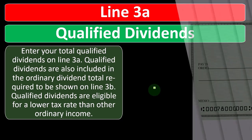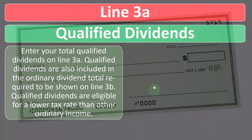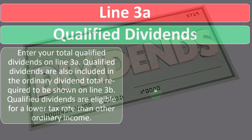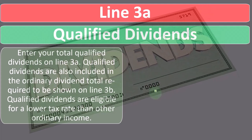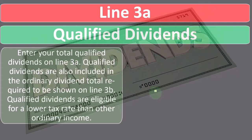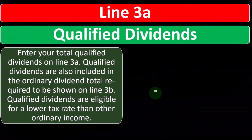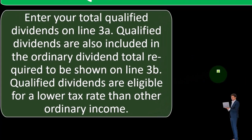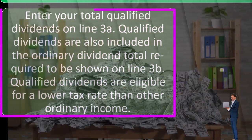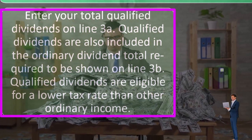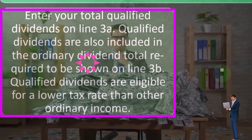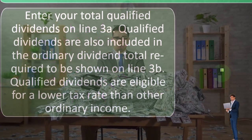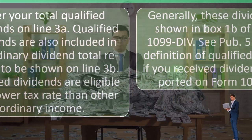Line 3A, qualified dividends. Enter your total qualified dividends on line 3A. Qualified dividends are also included in the ordinary dividend total required to be shown on line 3B. Qualified dividends are eligible for a lower tax rate than other ordinary income.